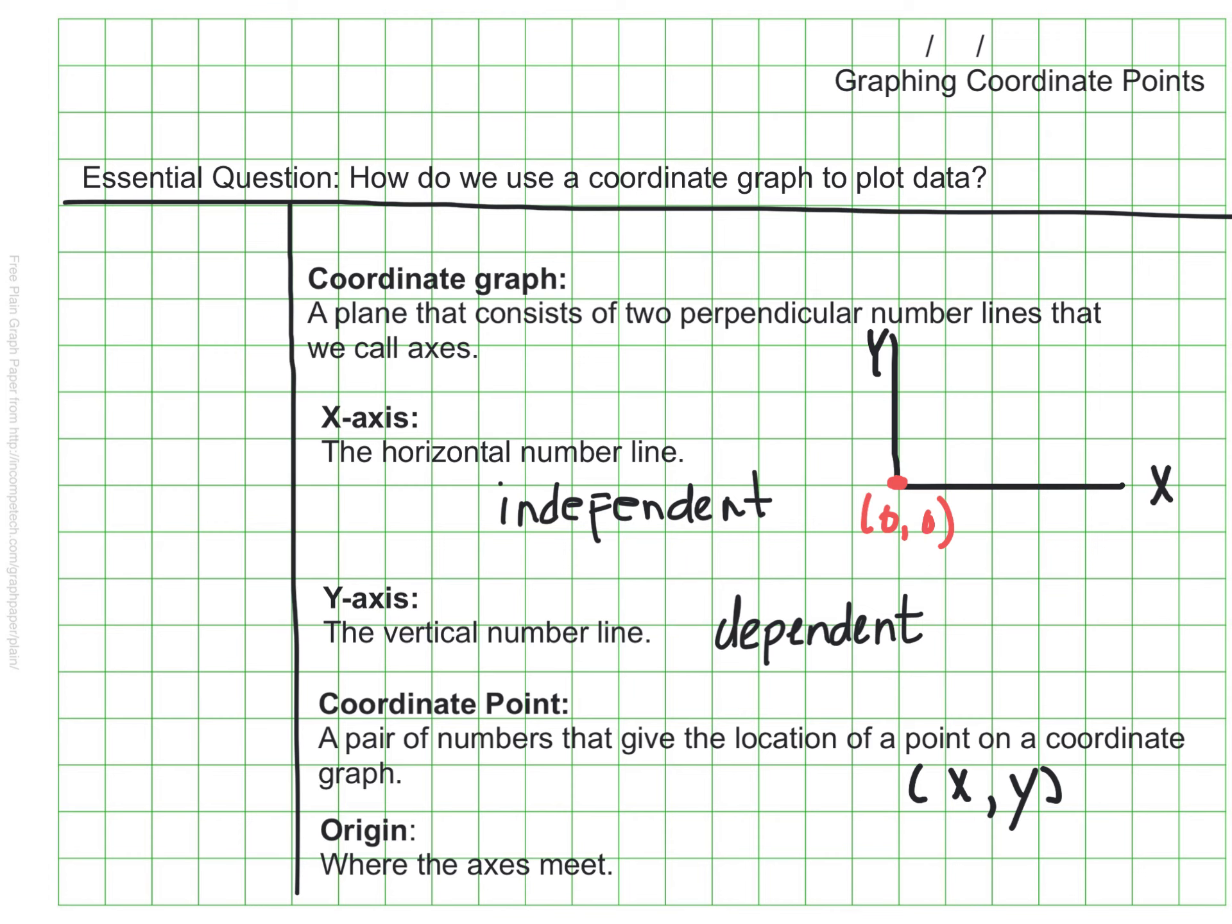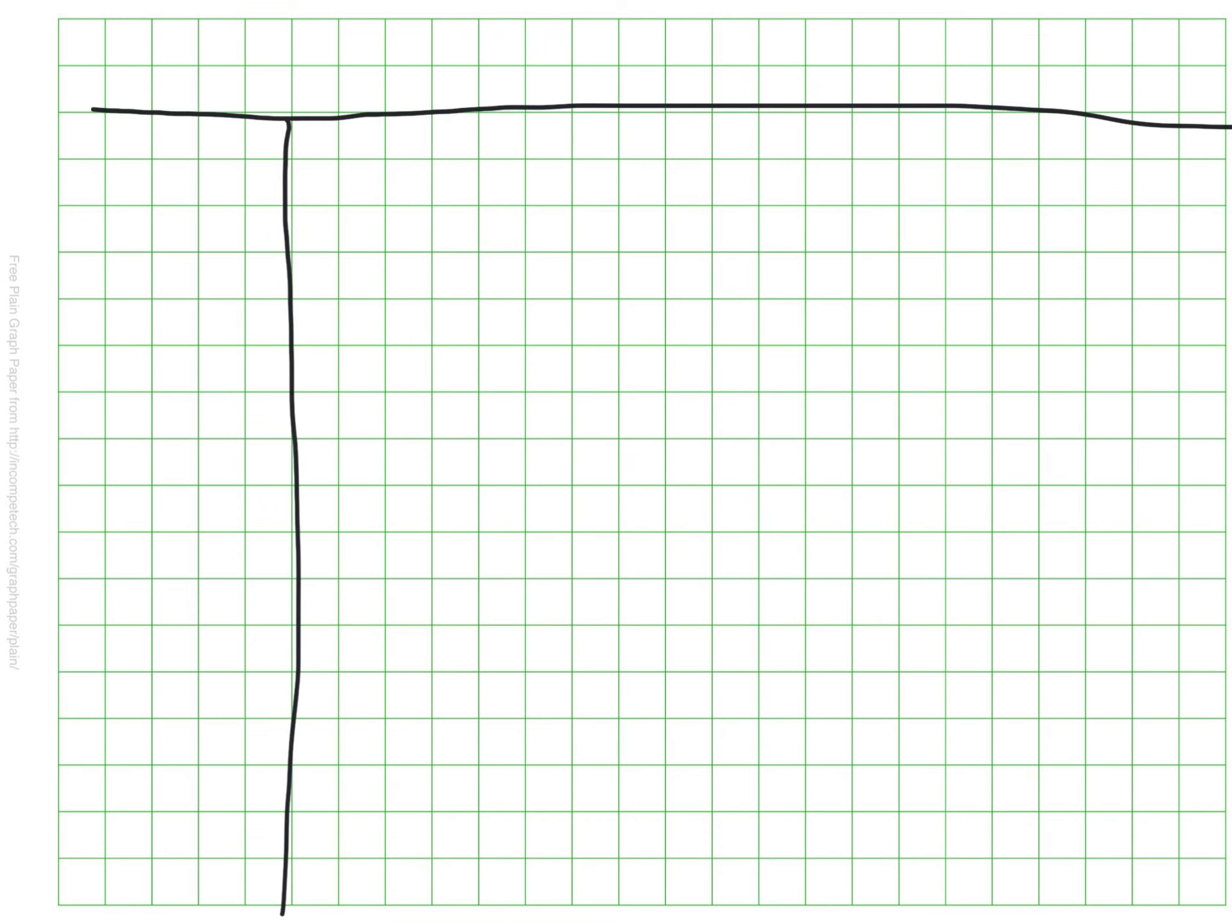So those are the key parts of a coordinate graph. We're going to take that information and set up a coordinate graph and just plot a few data points just to practice. So let's start by drawing our axes. So here I have the axes and I always need to label them. So this is my x and this is my y. And every graph needs a title. Since this is a graph that's practicing points, I'm just going to title it plotting coordinate points. I'll also go ahead and just mark my origin with the coordinate point 0, 0. That's right here where my two lines meet.